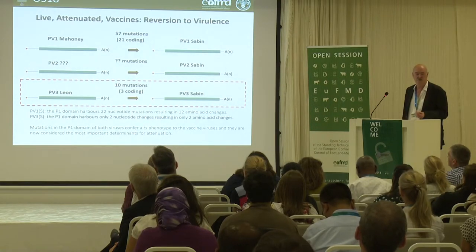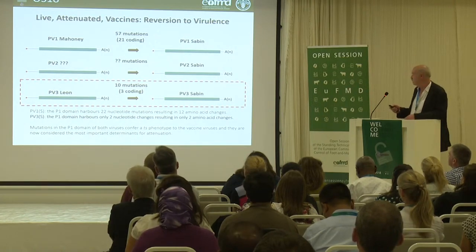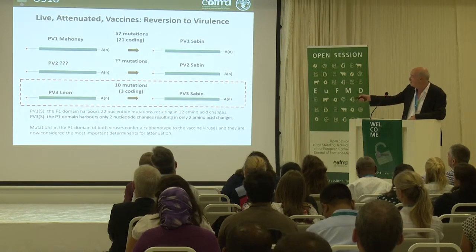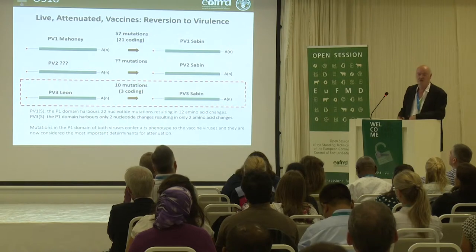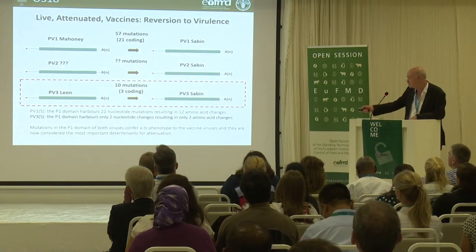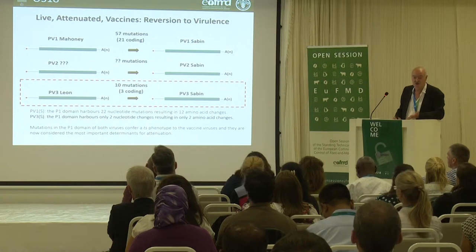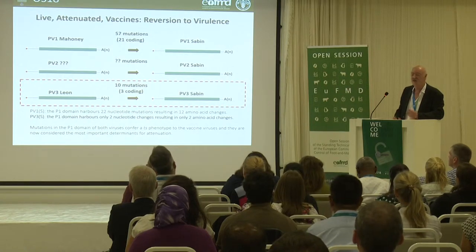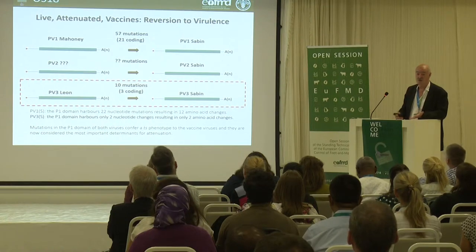In the 1980s, we were able to figure out what had actually gone on during that attenuation — this classical attenuation process by Sabin. We've got the type 1 and type 3 poliovirus. Type 2 unfortunately has been lost. We can map and find out how many mutations occurred during this classical serial passage method. With type 3, the problem is that there were a very modest number of mutations — only three coding changes — of which only two were present in P1, which is a major region of attenuation. That's the paradigm leveled at live attenuated vaccines derived by this classical method: a small number of key mutations which can back-mutate to give a virulent phenotype.